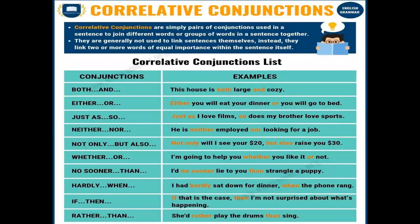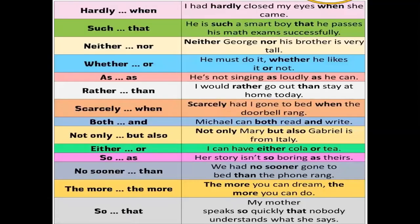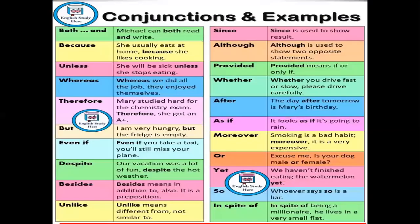Here are examples of correlative conjunctions: 'This house is both large and cozy.' 'He is neither employed nor looking for a job.' 'Neither George nor his brother is very tall' — meaning it applies to neither of them. More examples: 'Michael can both read and write.' 'She usually eats at home because she likes cooking.' 'Unless she stops eating, she will be sick.' You can read through these sentences to understand different kinds of conjunctions.